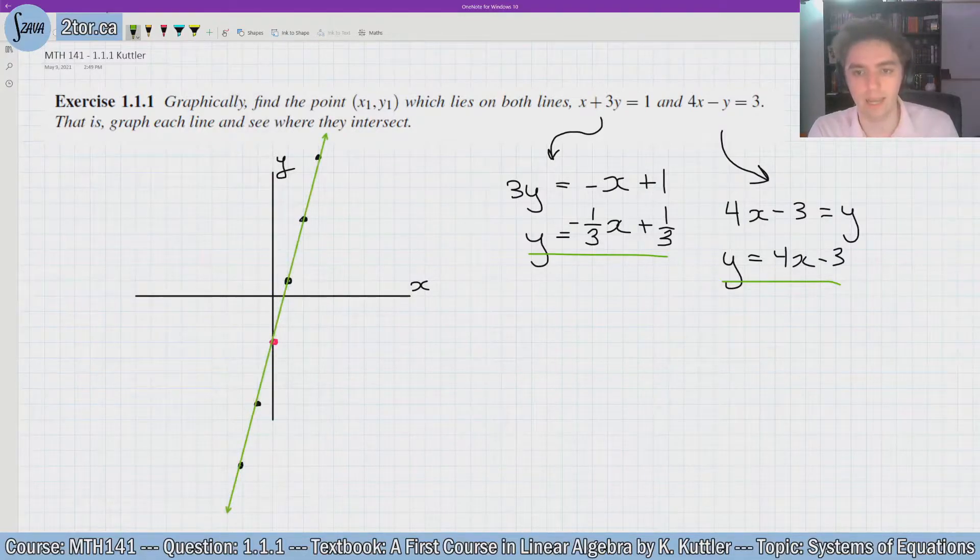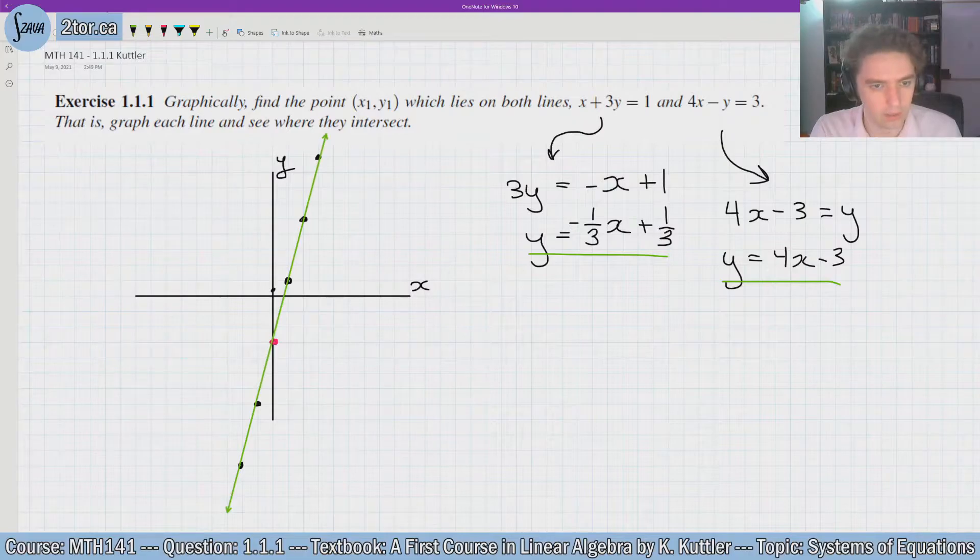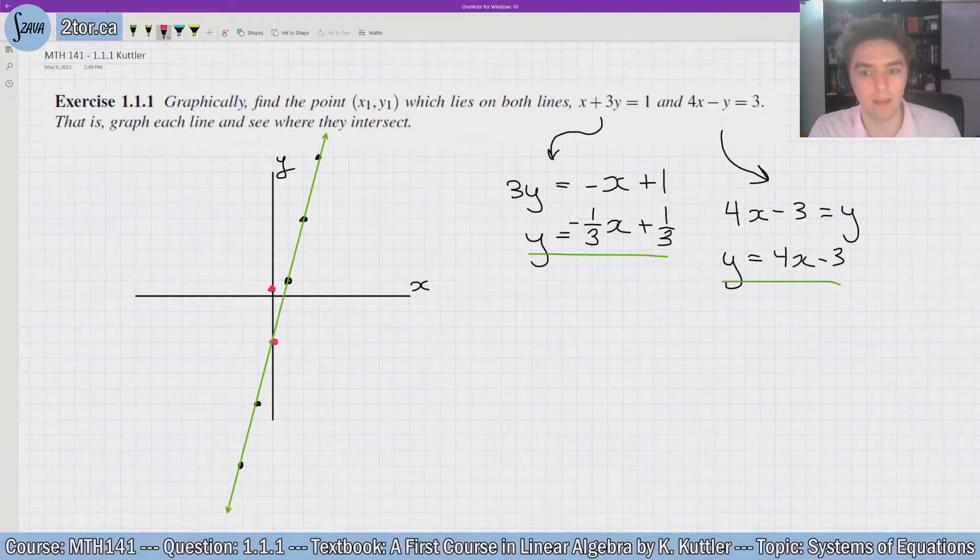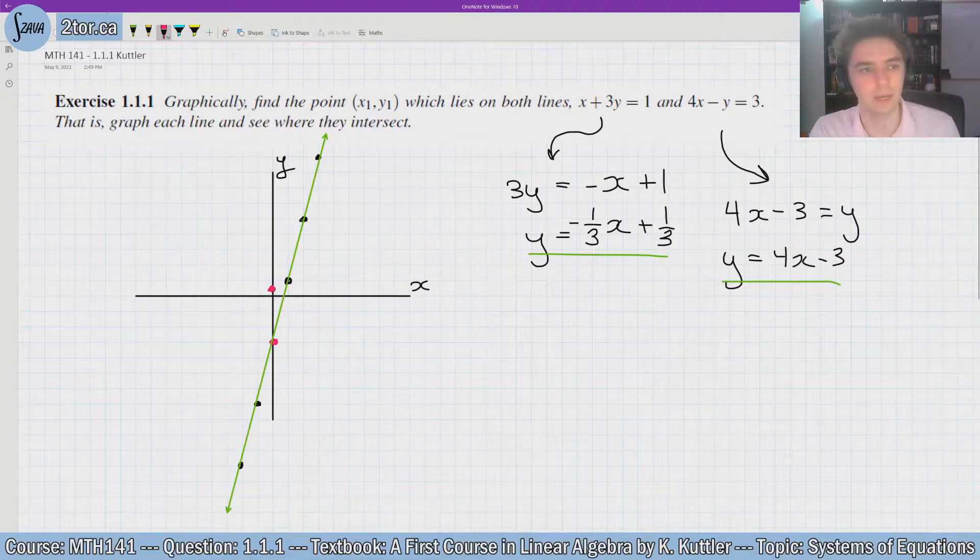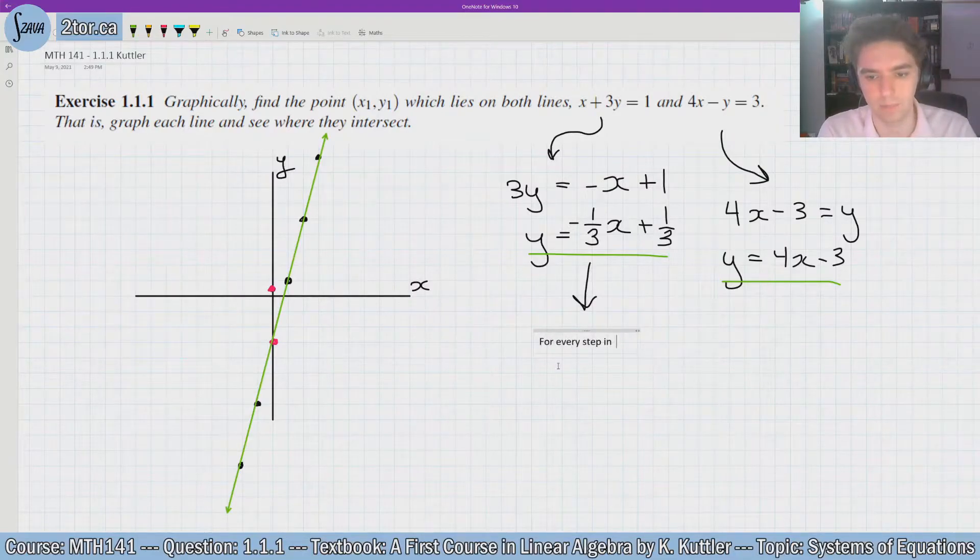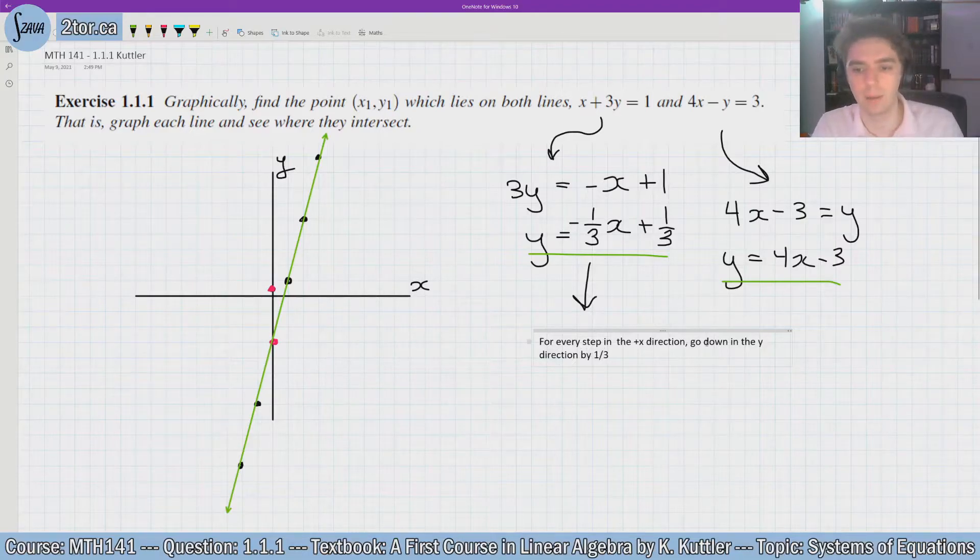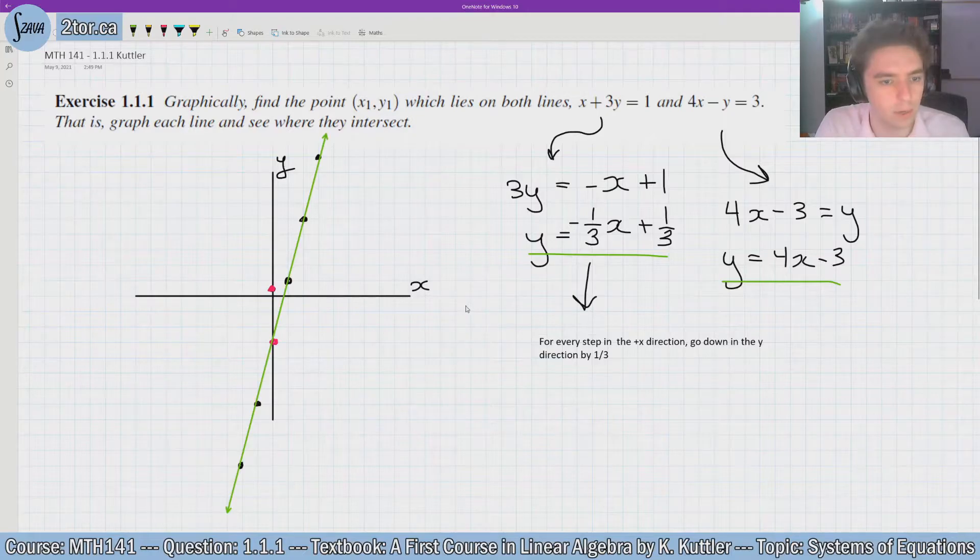And now let's take a look at this one. It's going to be y = -1/3x + 1/3. So we start at +1/3, which is right here. In fact I'll do it in red. That's the y-intercept. And then for every step, you can think of this slope in two ways. You can think of it as for every step in the positive x direction, go down in the y direction by 1/3. That's where that negative is. So if I go here, the next point would be right there, down by a third.